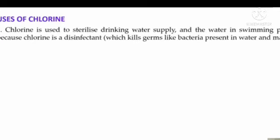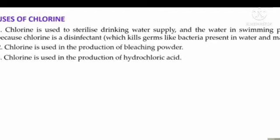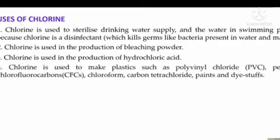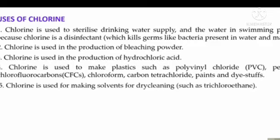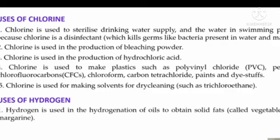Uses of chlorine: Chlorine is used to sterilize drinking water and swimming pool water because it is a disinfectant that kills bacteria. It is used in the production of bleaching powder and hydrochloric acid. Chlorine is used to make plastics such as polyvinyl chloride (PVC), pesticides, chlorofluorocarbons (used in air coolers and refrigerators), chloroform, carbon tetrachloride, paints, dye stuffs, and solvents for dry cleaning.